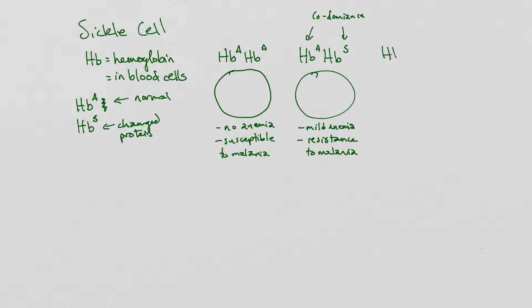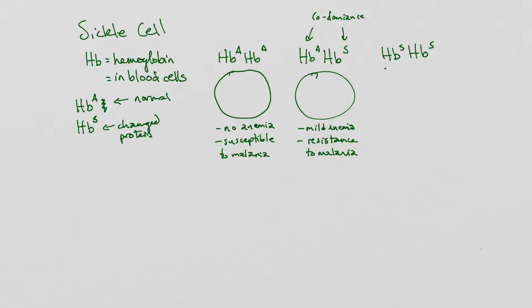And then we have these individuals here that have full sickle cell anemia. Anemia is a reduction in blood cells that can carry oxygen. And, these proteins don't carry oxygen very well at all. So, I want you to imagine a normal hemoglobin protein that looks a lot like this.